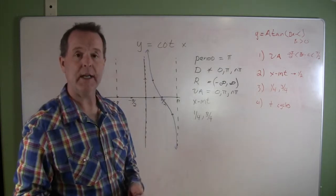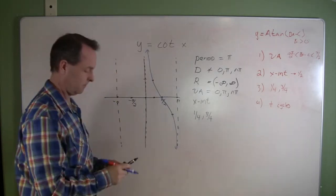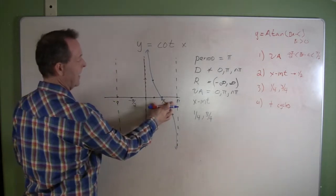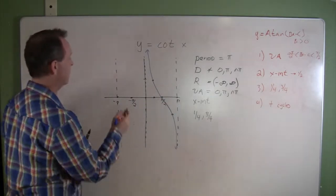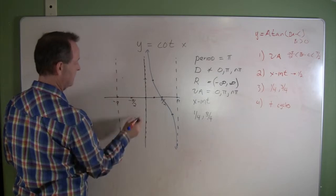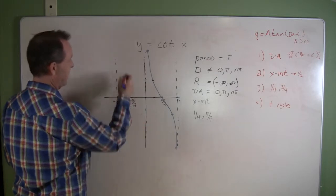It extends vertically towards infinity, and then I can take the same graph and repeat it at additional periods. So I'll have another graph here, replicate it.